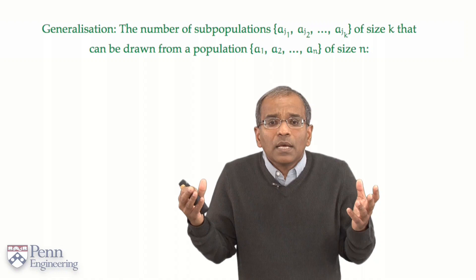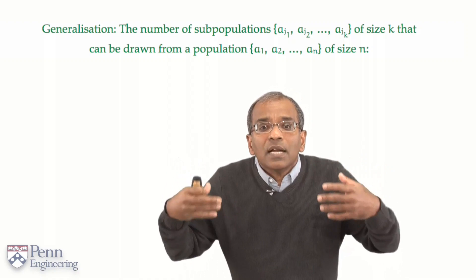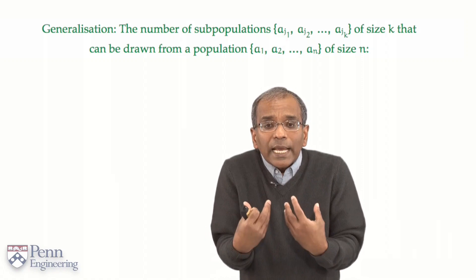There could be balls, there could be colors, there could be numbers, there could be letters. It is immaterial. All that is material that is germane is that there are n distinguished elements in your population.